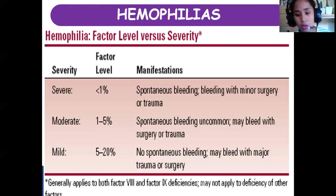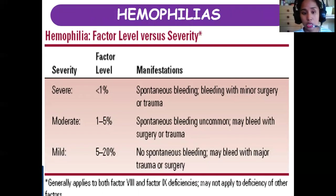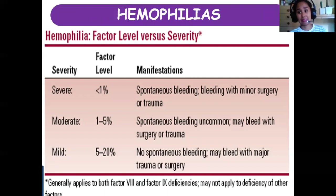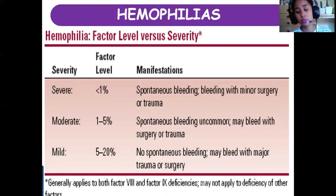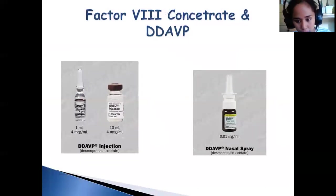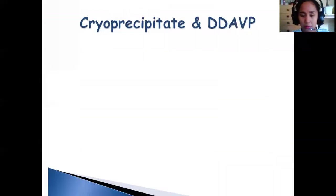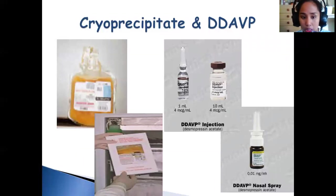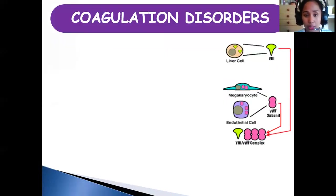The activity levels of factor 8 and factor 9 dictate the severity of hemophilia. Severe hemophilia is defined as less than 1% factor activity. Activity as high as 5 to 20% means there would be no spontaneous bleeding. Treatment includes DDAVP nasal spray and injection, as well as cryoprecipitate, which increases coagulation factors including factor 8.